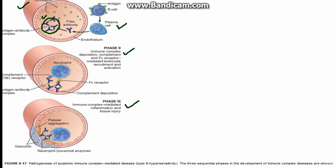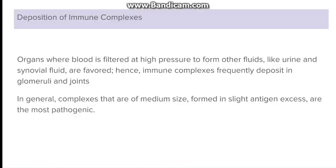These leukocytes which were recruited release various enzymes, lysosomal enzymes, and reactive oxygen species leading to vasculitis over the vessel wall. Going to the deposition of the immune complex, it was noted that particularly glomeruli and joints are involved in type 3 hypersensitivity reaction. The reason is that these are the organs where blood gets filtered at high pressure to form other fluids like urine in the case of glomeruli or synovial fluid in the case of joints, and therefore the immune complex also gets frequently deposited there.